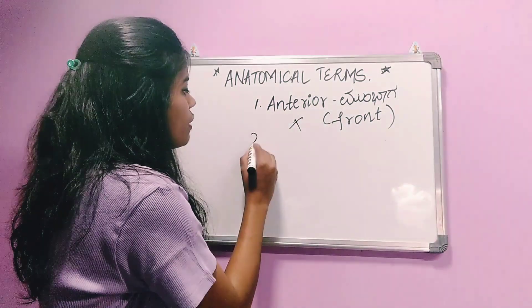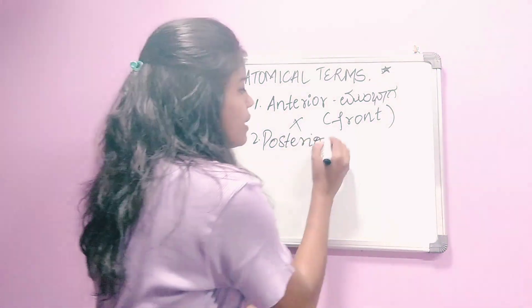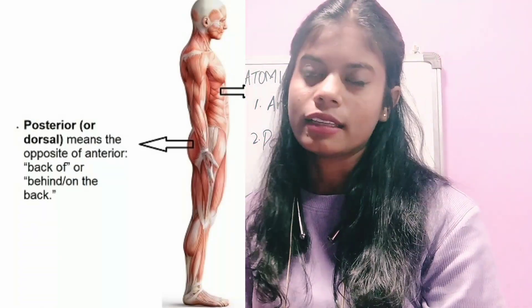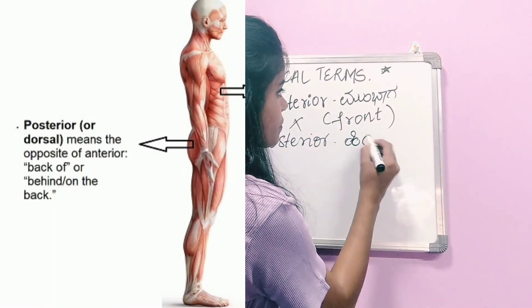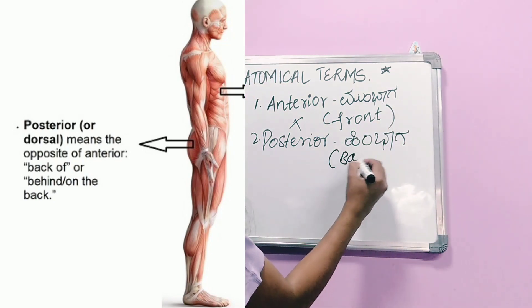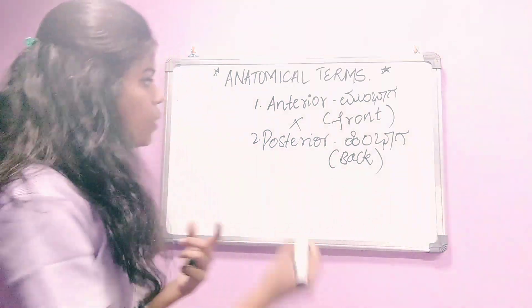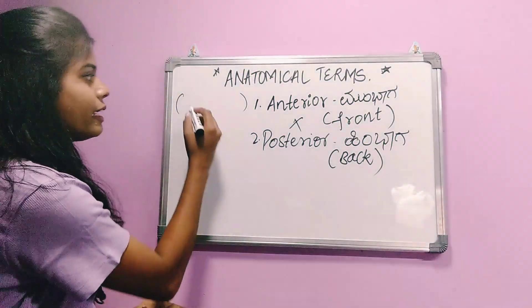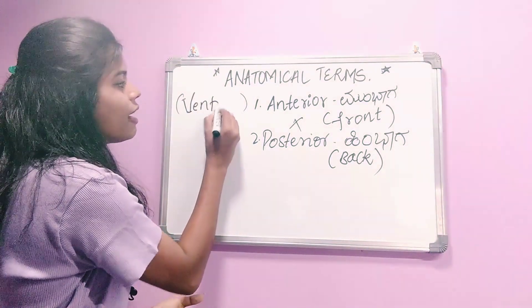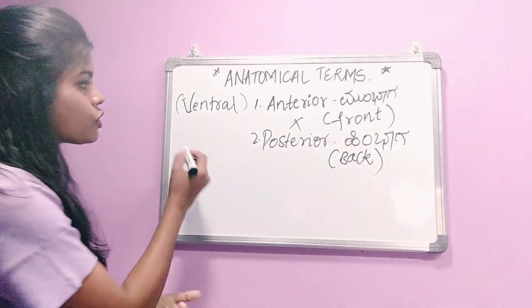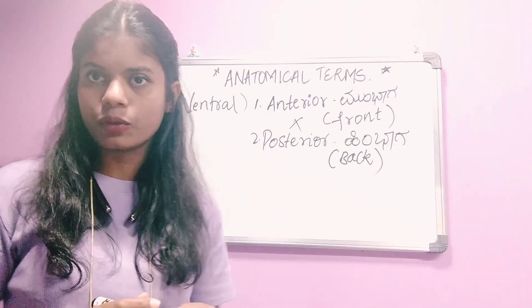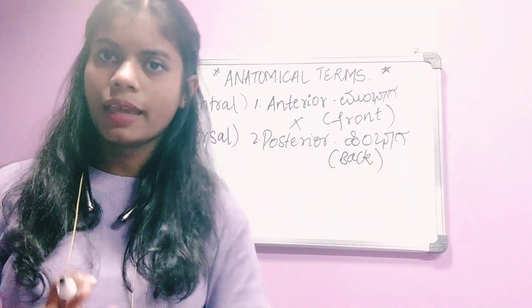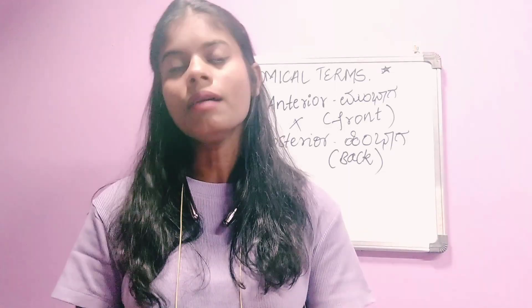Posterior is the opposite of anterior — it means back. So front and back are called anterior and posterior. Anterior can also be called ventral — V-E-N-T-R-A-L. Posterior can also be called dorsal — D-O-R-S-A-L. So anterior/ventral means front, and posterior/dorsal means back.